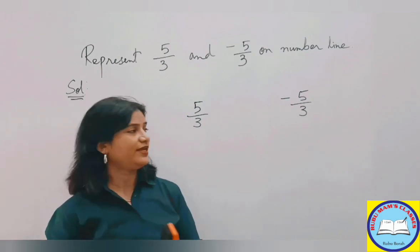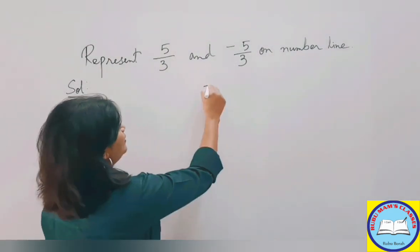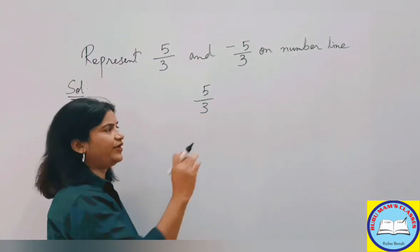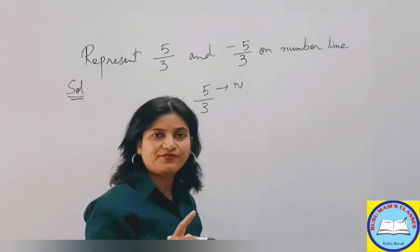Now next, what we need to do. We need to see the numerator of this rational number. Now see, your 5 upon 3. This numerator is greater than denominator, so whenever numerator is greater than denominator, to see where that rational number exactly would lie, you need to divide 5 upon 3.